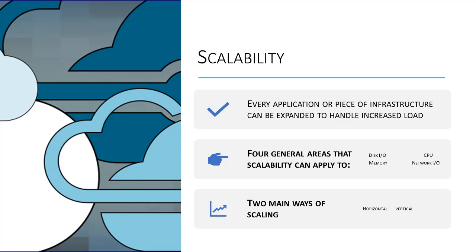Typically systems have four general areas that can scale. Those include disk I/O, memory, network I/O, and CPU or processor.